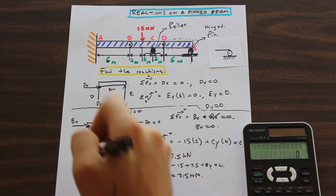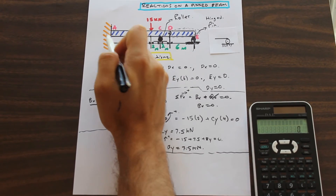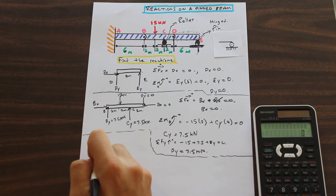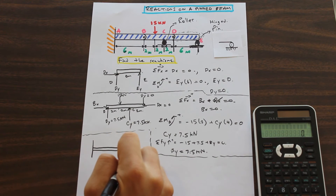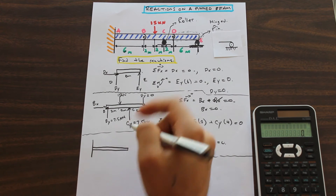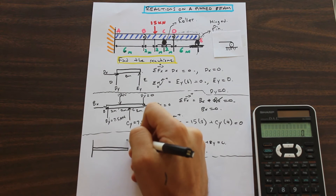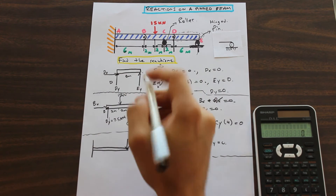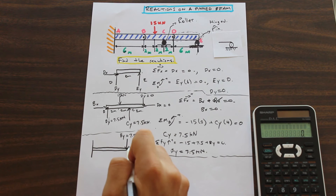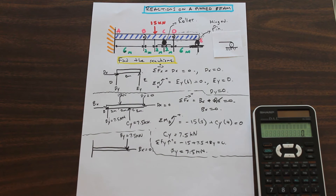The final step is to cut out section AB. This is our AB section. At point B, with equal and opposite reactions — if BY and BX were assumed upward and to the right in the previous section, they need to be opposite when we cut from this side. So BY equals 7.5 kilonewtons acting downward, and BX equals zero.